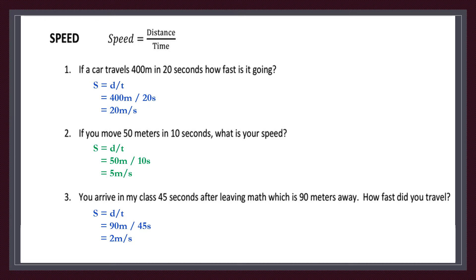Second question: if you move 50 meters in 10 seconds, what is your speed? Using the same equation — speed equals distance over time — with 50 meters and 10 seconds, we get the answer: 5 meters per second.